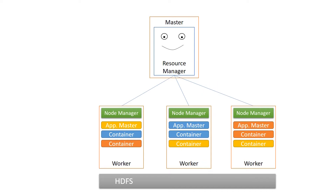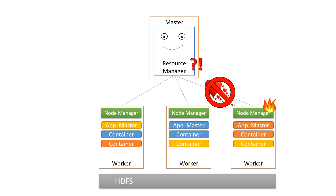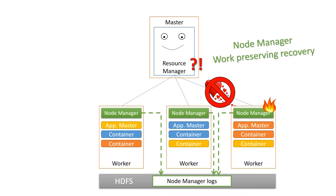Now let's see what happens when a node manager dies. Well, the node manager also sends heartbeats to the resource manager — it's the way that the resource manager knows the worker is still alive. So no heartbeats means no node manager. This would be a problem because all that work done by containers on this worker node could then be lost. So in more modern versions of Hadoop, there is something called work-preserving recovery for node managers. This basically means that the node managers save their state to a log file, and in high availability environments it is more useful to do this on HDFS because it's a distributed system.